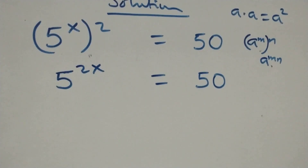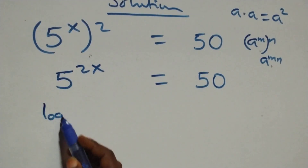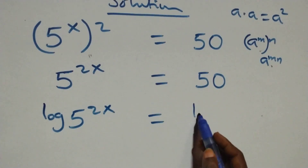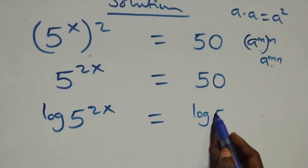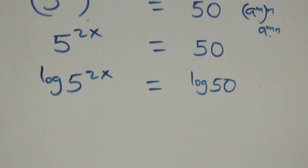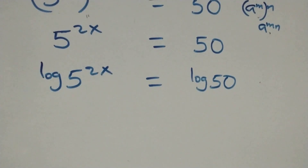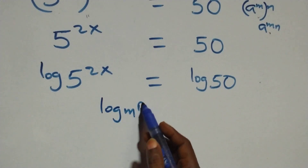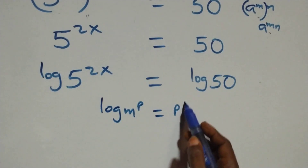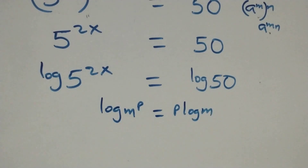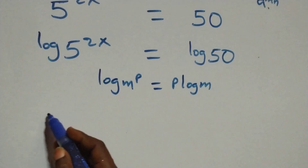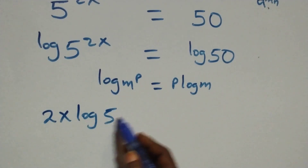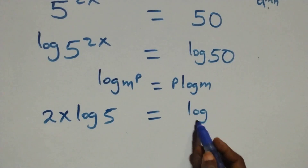We take the log on both sides. We have log of five raised to power two x equals log fifty. We apply the power rule of logarithm: log m raised to power p is the same thing as p log m. So what we have becomes two x log five equals log fifty.